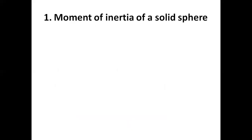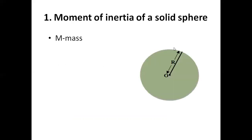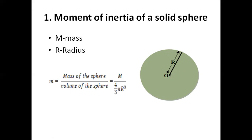Now let us consider the calculation of moment of inertia for a solid sphere about different axes. Consider a solid sphere of radius R, with O as the center of the sphere. Let M be the mass of the sphere and let small m represent the mass per unit volume, which equals M divided by the volume 4/3 πR³. From this, the expression for total mass M = 4/3 π m R³. Let this be equation 1.